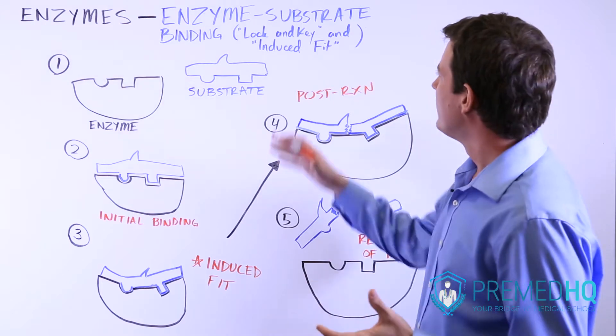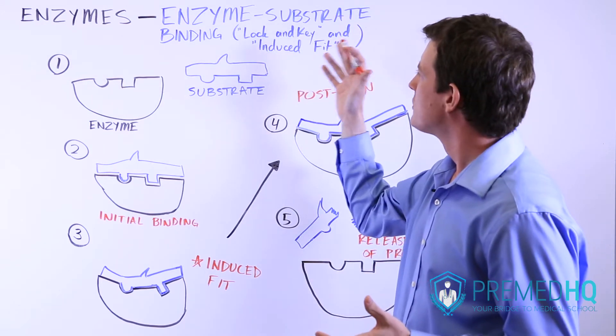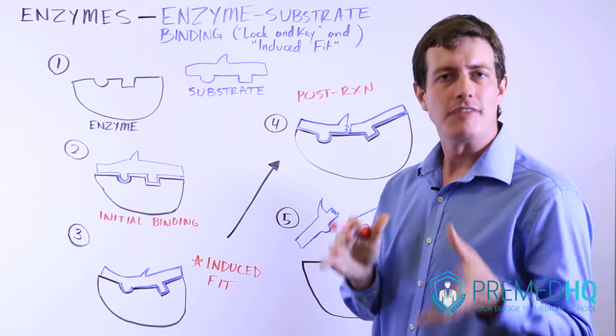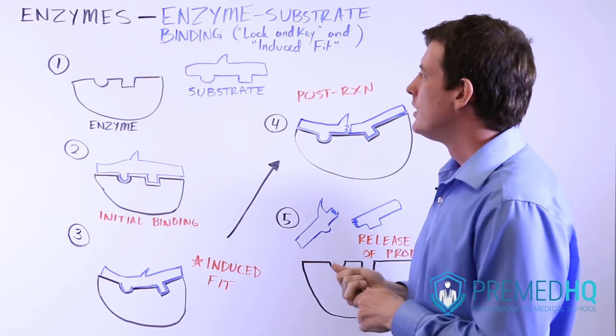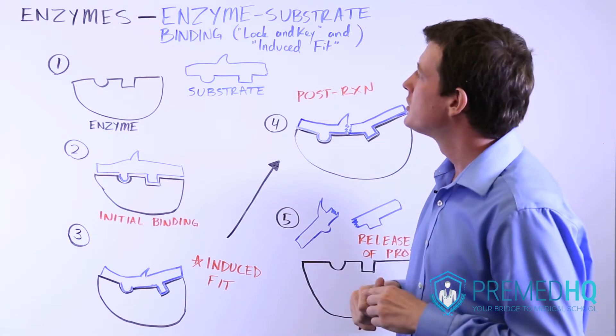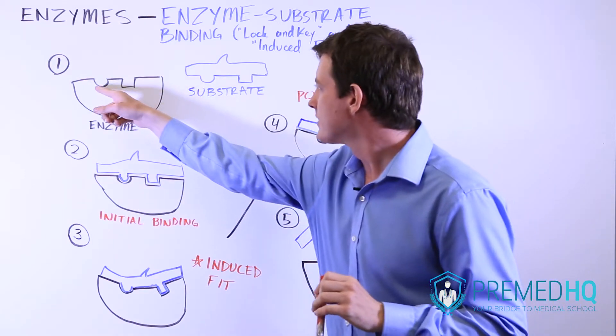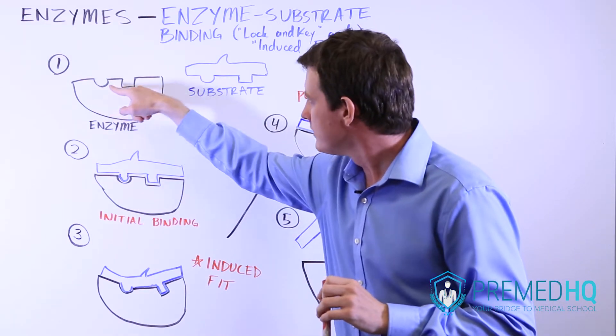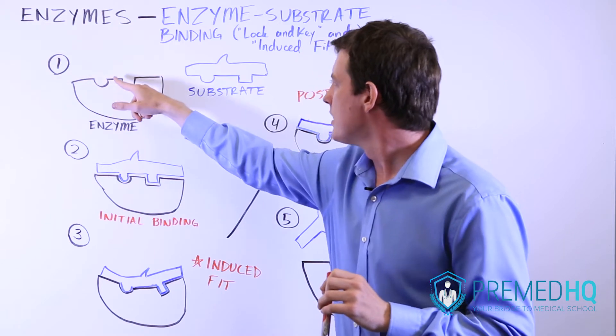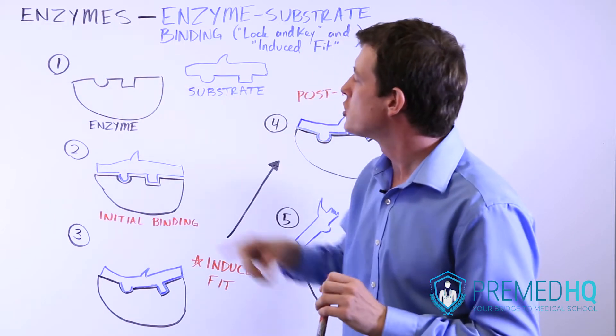Now we'll talk about enzyme binding with the substrate and what happens after that occurs. Before we do that, let's talk about a feature of enzymes. An enzyme has an active site, and I've drawn this with a little semicircle here and a little square shape there.